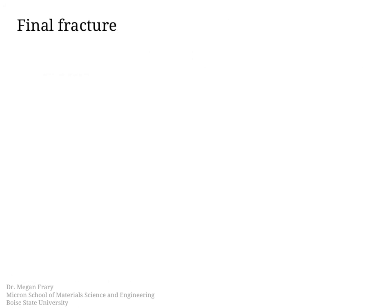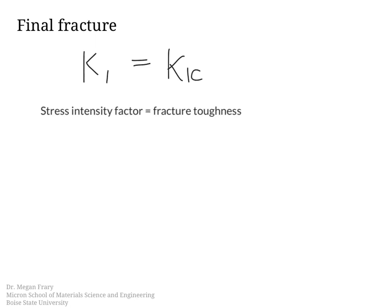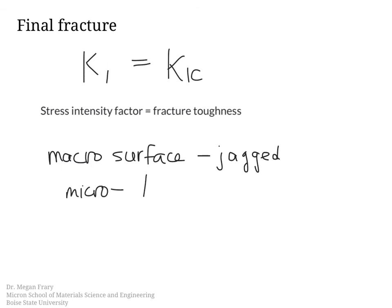The final piece is the final fracture of the material, which happens when the stress intensity factor in mode 1 loading equals the fracture toughness. At the macro scale, the fracture surface will typically be jagged. At the micro scale, it depends on the material — there may be dimples from ductile fracture, or brittle cleavage, or some combination of the two.